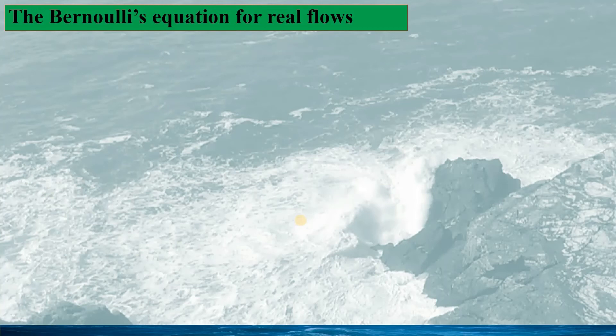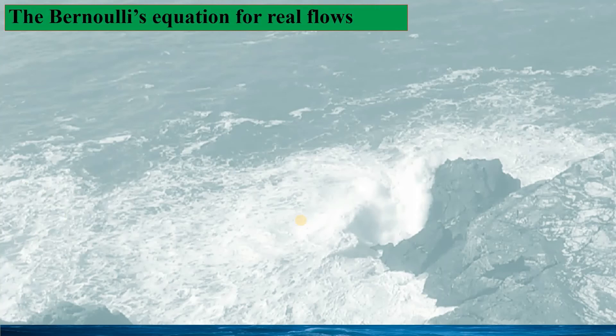For most pipe flows, the Reynolds number is large and the majority of the flow can be regarded as irrotational. Hence, for most practical problems, pipe flow can be treated as irrotational, especially if we are only interested in the flow velocity. However, one limitation of potential flow is that the flow is taken as inviscid, so flow friction and pressure drop in the pipe cannot be captured.